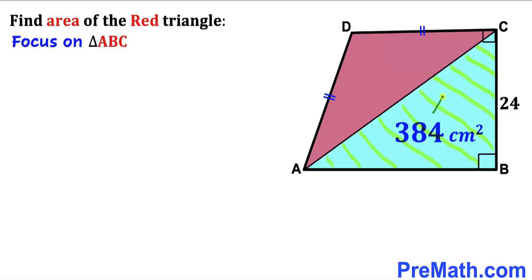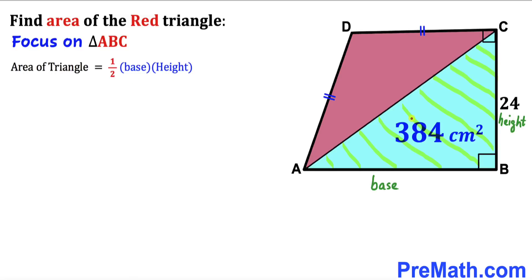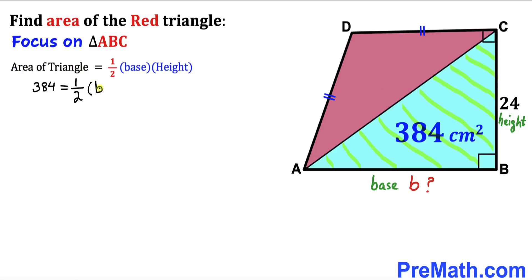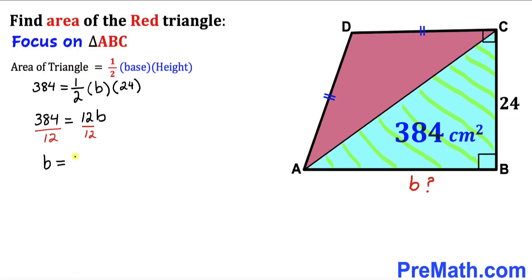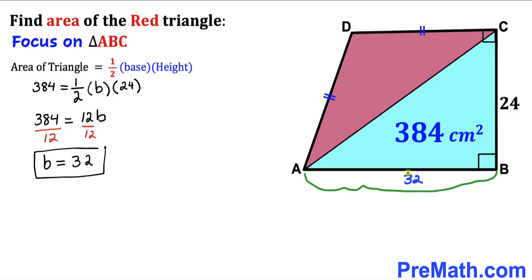Let's focus on the blue triangle and recall the area of a triangle formula: Area = ½ × base × height. The area is 384 cm² and the height is 24 cm. Setting up: 384 = ½ × b × 24, which simplifies to 384 = 12b. Dividing both sides by 12, the base b turns out to be 32 cm, so AB = 32 cm.